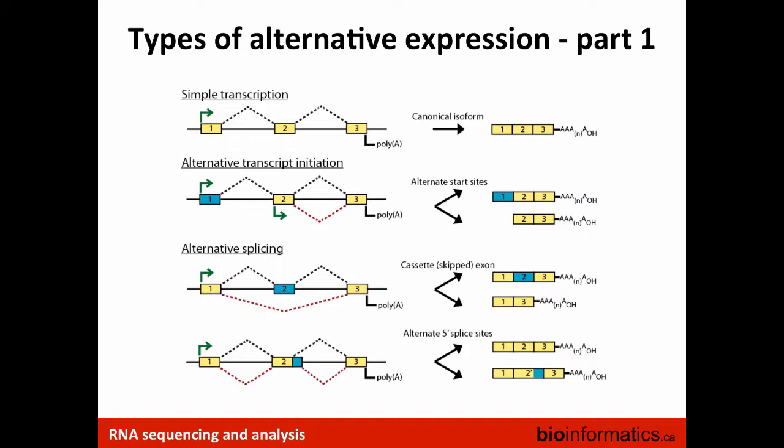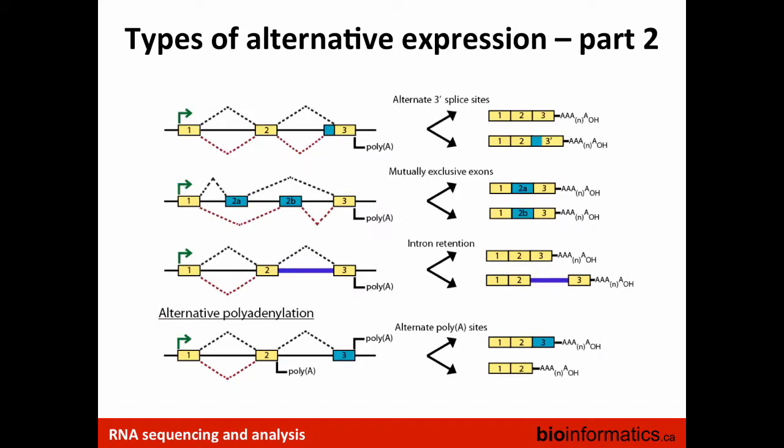Alternative splicing has several well-established forms. Perhaps the most famous is exon skipping, where we have two paths through a set of exons — including exons 1, 2, 3, or skipping exon 2 — giving transcripts with the same beginning and end but something different in the middle. You can also have alternative 5' splice sites, where two different donor sites are used, giving a longer version of exon 2. The same thing can happen at the 3' end with alternate acceptor sites, giving slightly different isoforms.